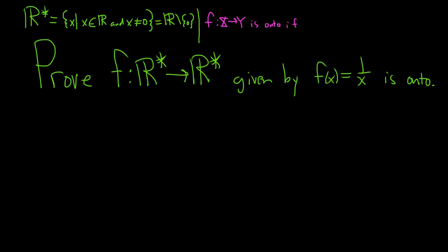If for all y in capital Y, for all y in the codomain, there exists some x in the domain capital X such that f takes x and sends it to y. So if this was capital X and this was capital Y, given some y here, we can always find some x here such that f takes x to y.